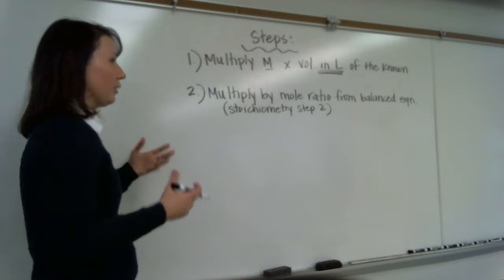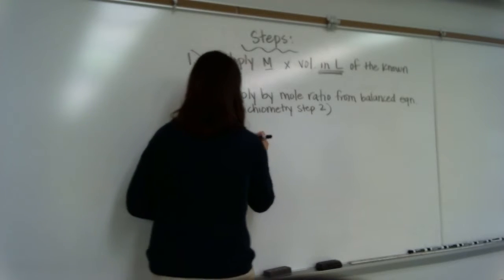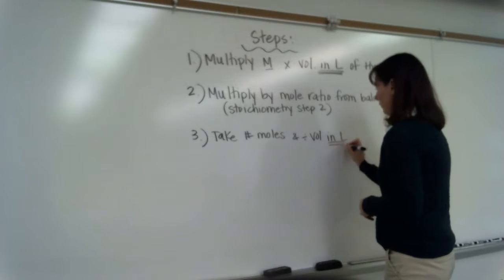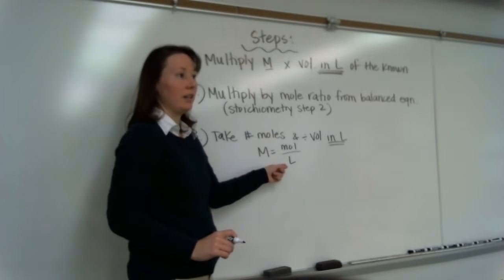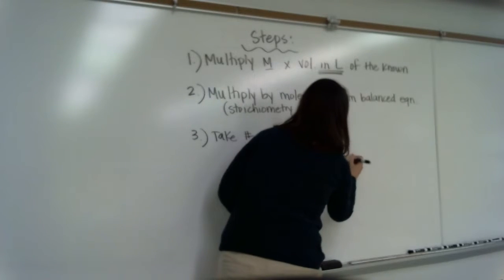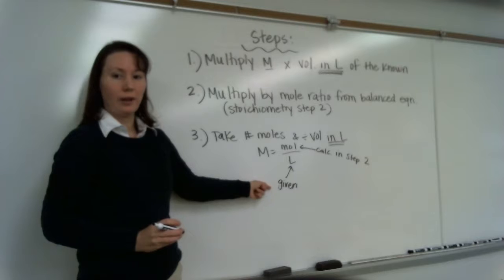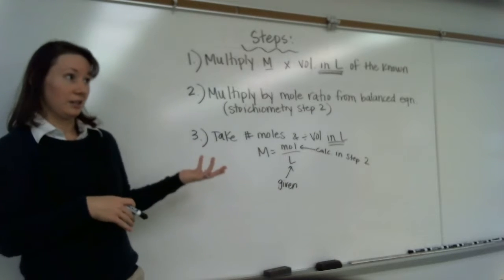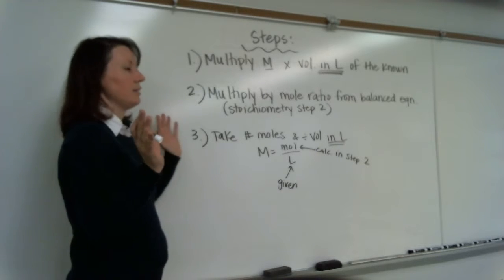And then step three, the easy step, there's no grams to moles, dealing with molar mass, or anything like that. In step three, take number of moles and divide by volume in liters. Because molarity equals moles over liters. You get moles from step two, and liters is given in the problem. So it's not that bad. If you understand stoichiometry, you'll understand this. And this is even easier than stoichiometry, because you don't have to deal with molar masses. No molar masses to deal with here. Woohoo! Straightforward.